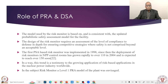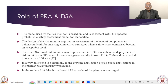PRA provides a complete integrated model of the plant and a quantified statement of risk: core damage frequency at Level 1. Level 2 is the risk of release out of the plant — the source term frequency. Level 3 is the risk to the member of public. This testifies to the growing application of the risk-based approach.